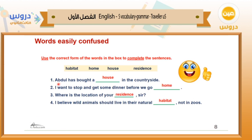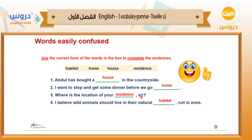The correct answers are: Abdul has a 'boathouse' in the countryside. I want to stop and get some dinner before we go 'home'. Where is the location of your 'residence'? And I believe wild animals should live in their natural 'habitat', not in zoos.